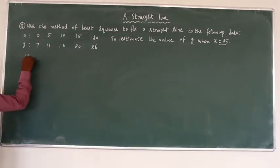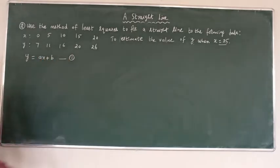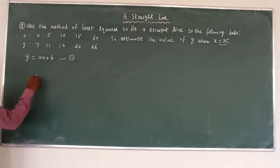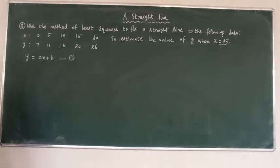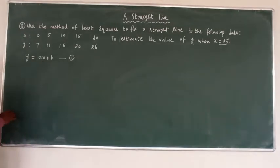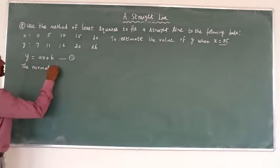Now the formula for a straight line is Y is equal to aX plus b. This is equation number 1. We have to find out the values of a and b, which are constants. For that, we can use the normal equations.